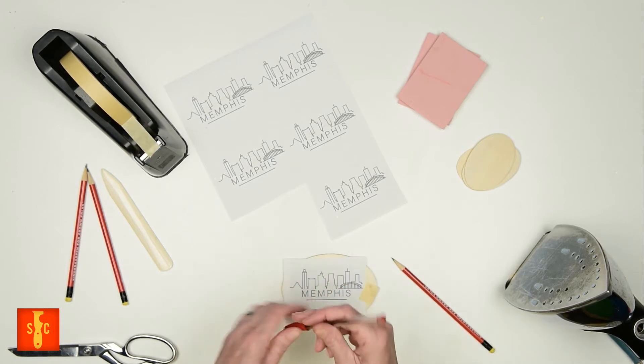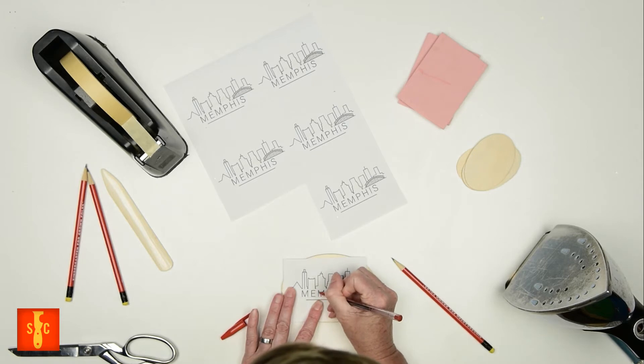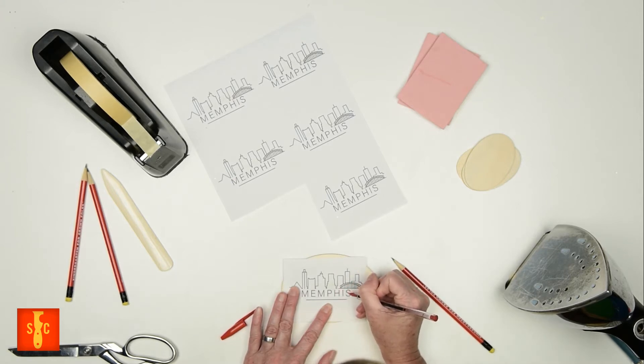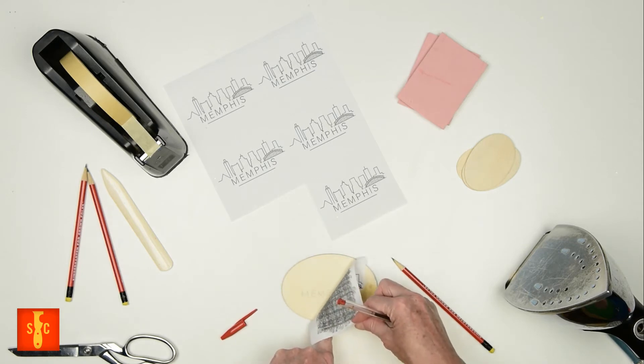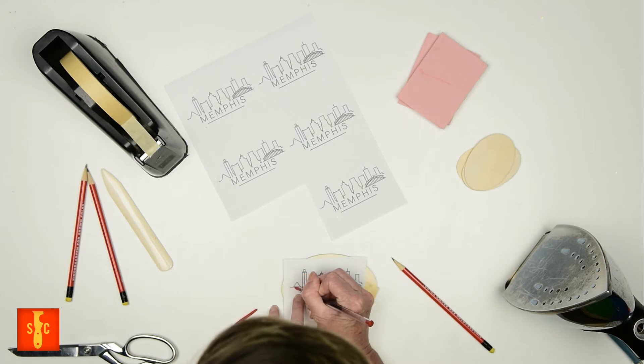Next I'm going to trace this image with my pencil stylus or pen. I really like to use a red ink pen to do this because it makes it really easy to see where I've traced. Once I get a little bit of it done, I'll pull up a corner, careful not to move it, and make sure that it's actually transferring. Looks pretty good. I'm going to do a little more for you.